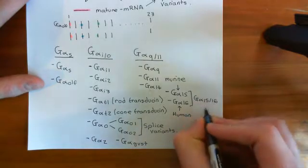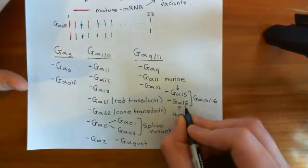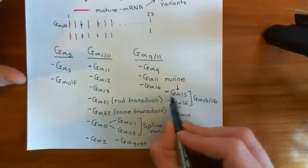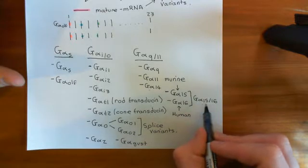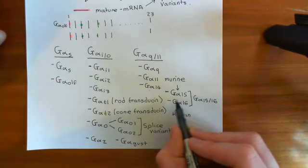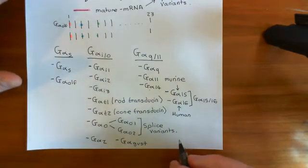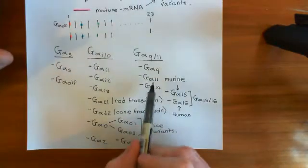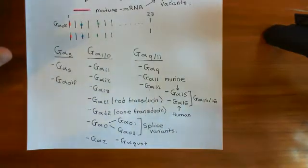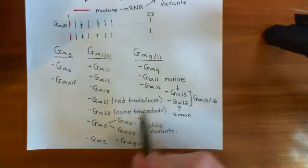If you see the notation G alpha 15/16, that means G alpha 16 if we're referring to humans. So in humans you do not have G alpha 15 — you have G alpha 16 — but there is a movement to recall it G alpha 15/16 because they both do effectively the same thing: G alpha 15 does it in mice, and G alpha 16 is in humans. Overall in this family there are four genes found in humans: G alpha Q, G alpha 11, G alpha 14, and G alpha 16, which you might see called G alpha 15/16. G alpha 15 on its own is not found in humans — that's a mouse one.